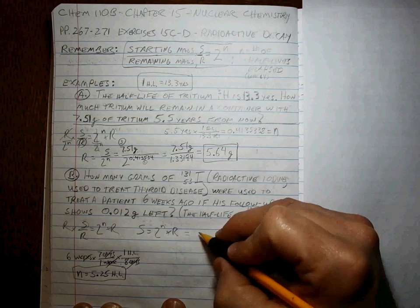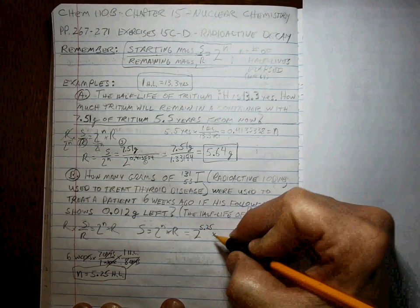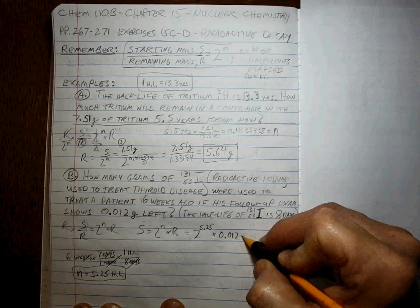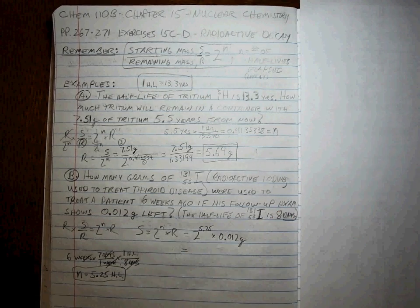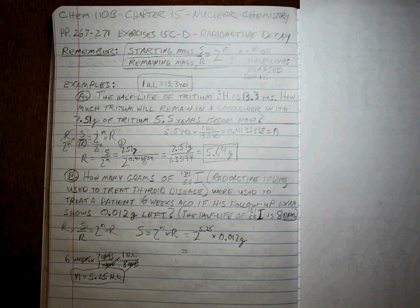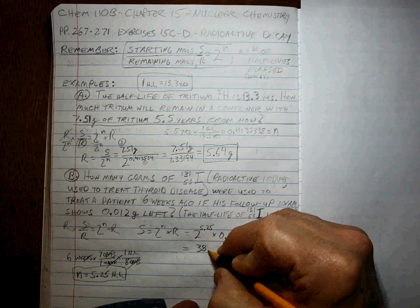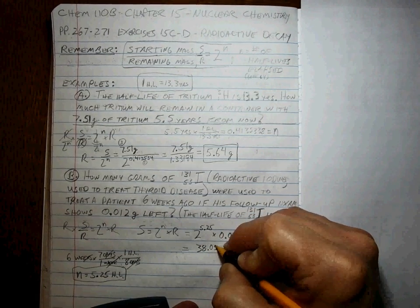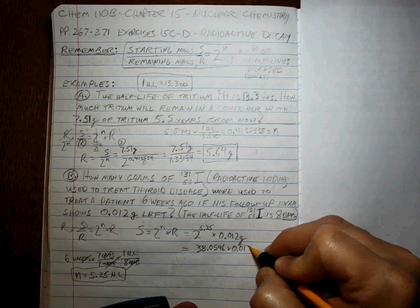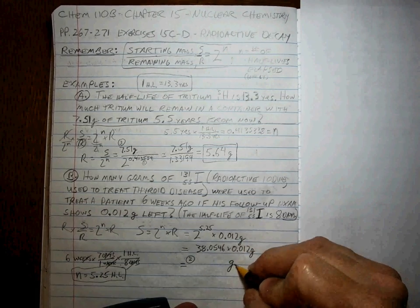S is equal to 2 to the 5.25 times remaining is 0.012 grams. So what is 2 to the 5.25 power? It's 38.0546 times 0.012. And you can see where the answer should only have two sig figs. The units have to be grams.